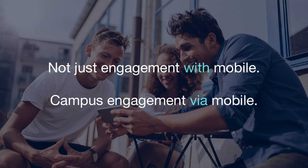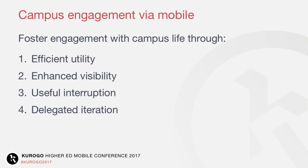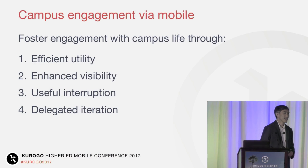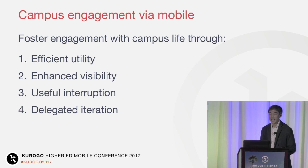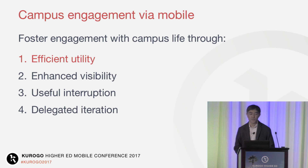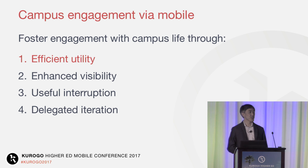Facilitating engagement with the life of the campus community via mobile is our goal. I'll spend the rest of this time talking about four broad approaches and drilling down into each of them where we can do better at fostering campus engagement via mobile. They are: efficient utility, enhanced visibility, useful interruption, and delegated iteration.